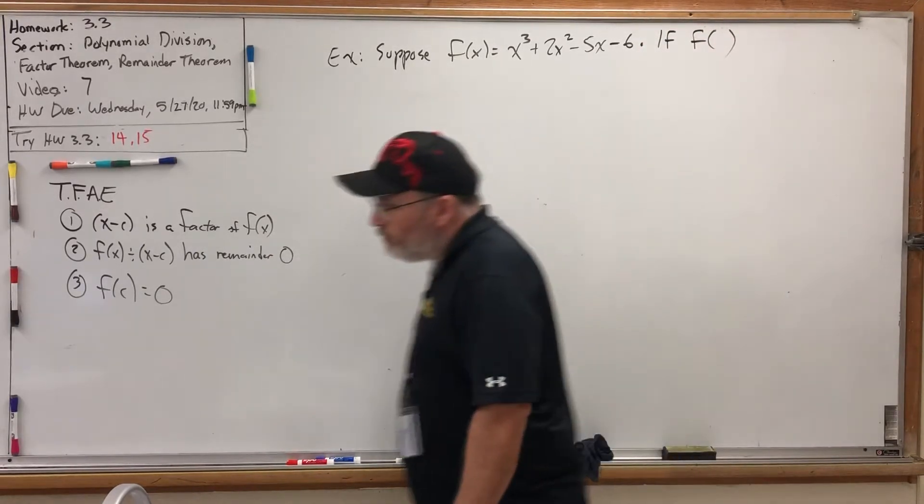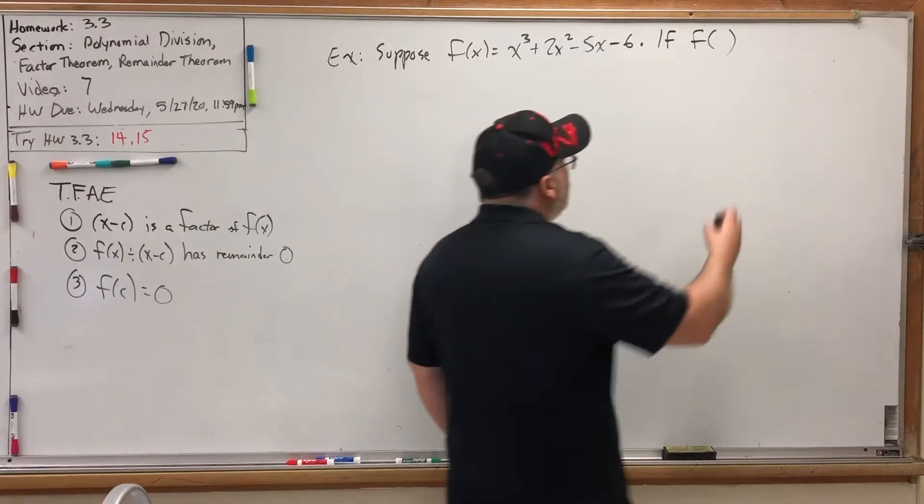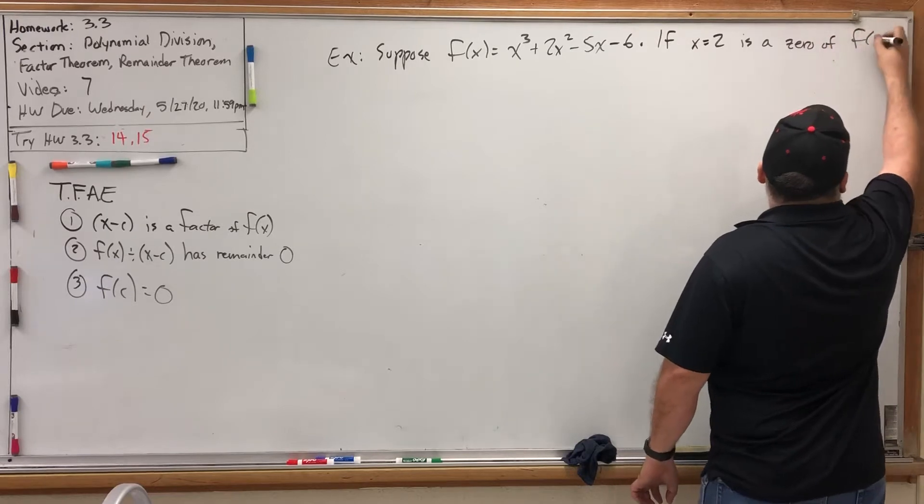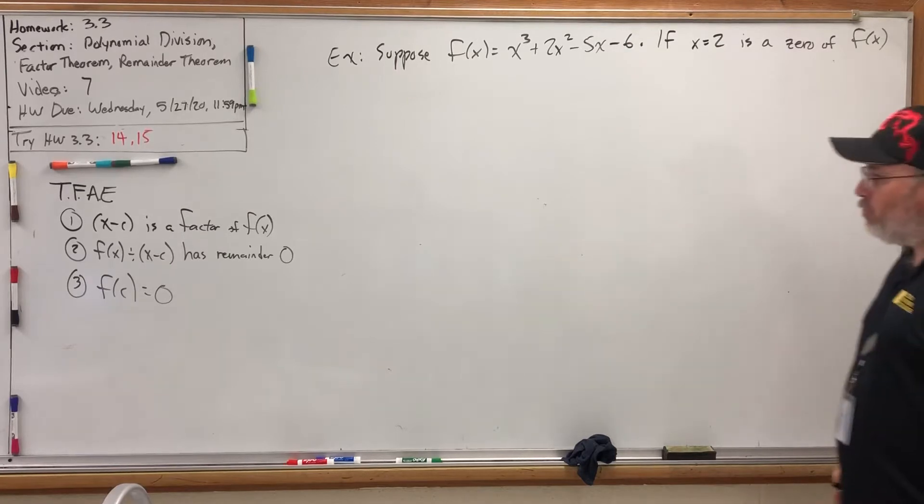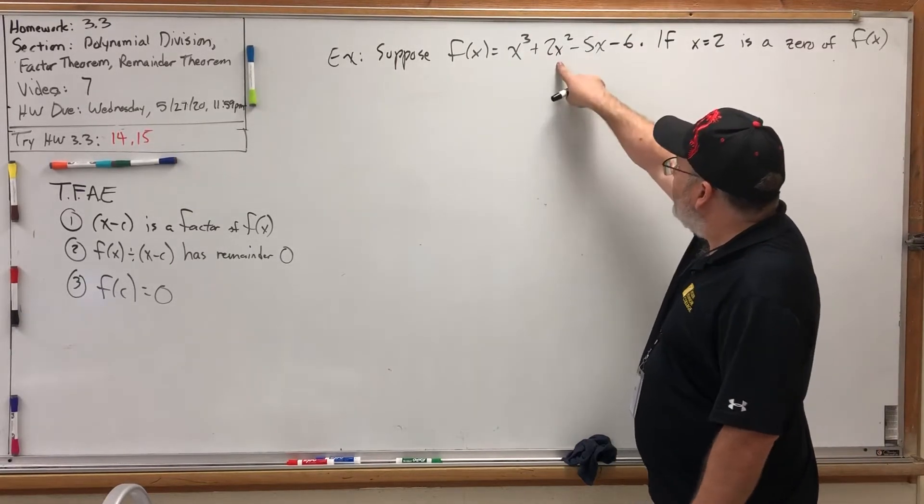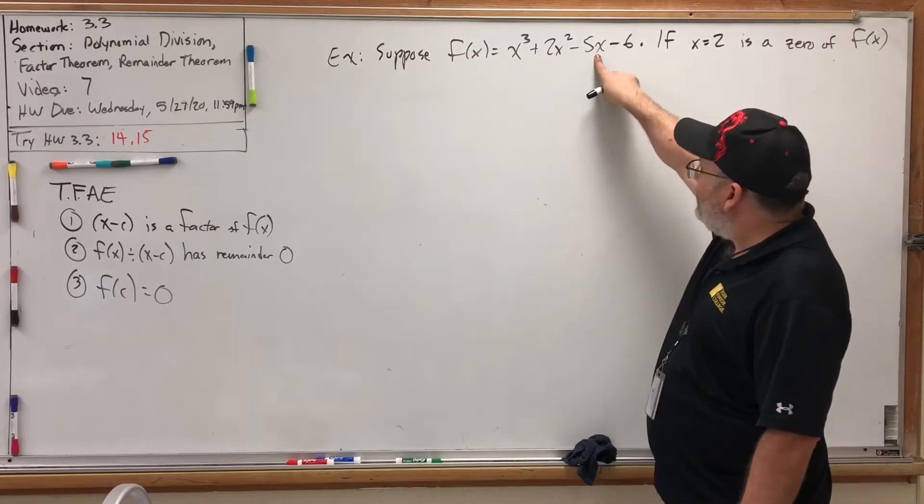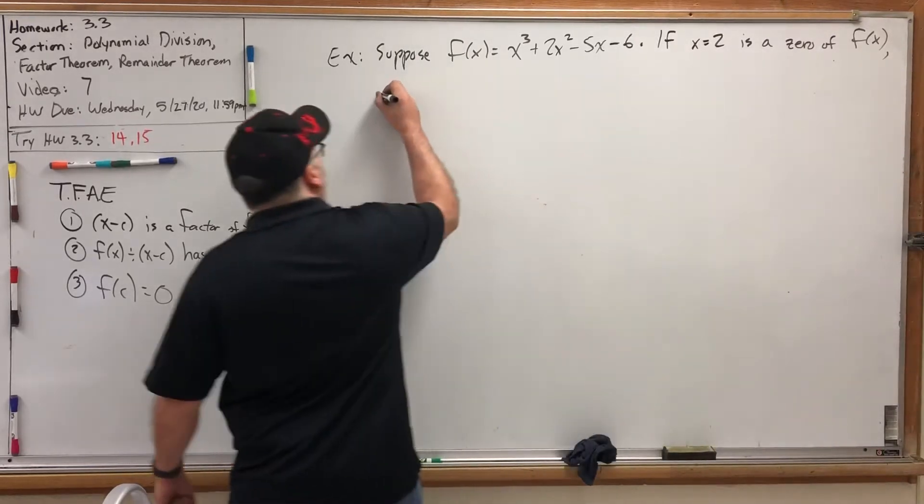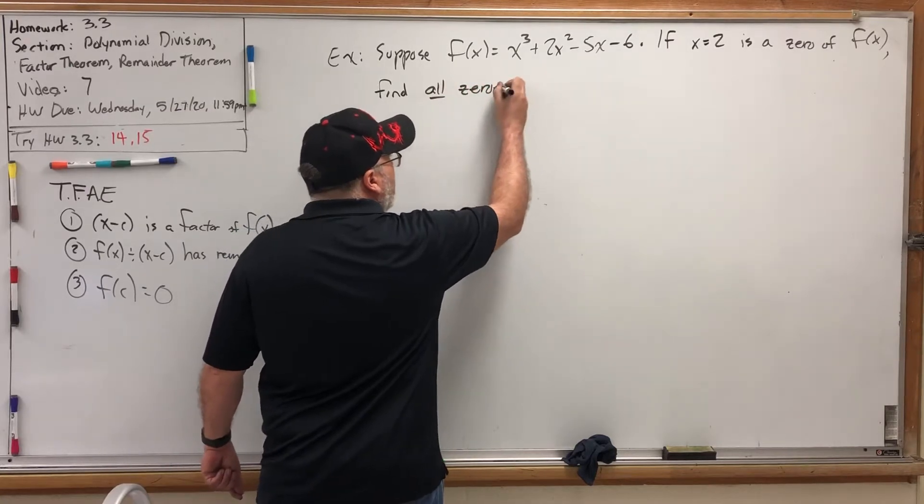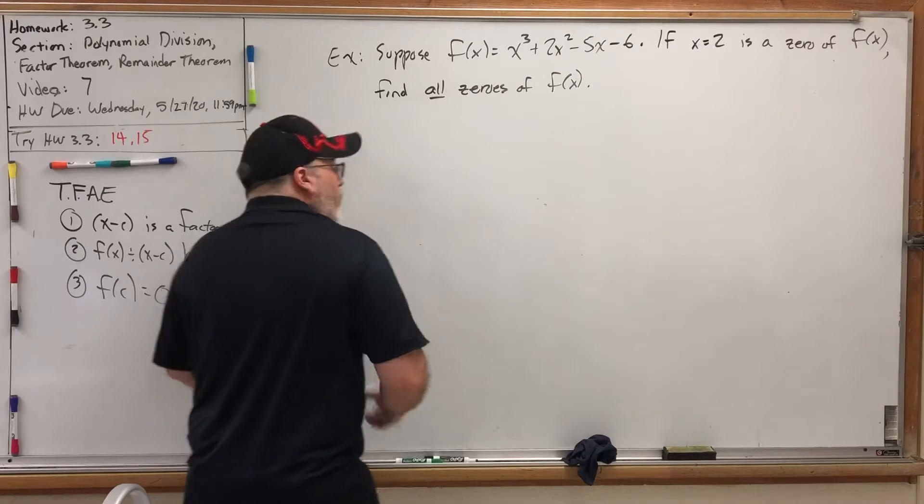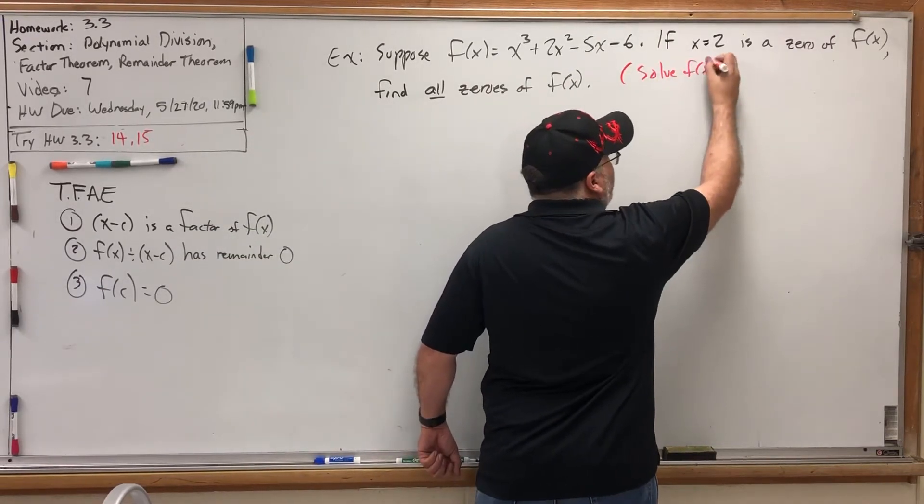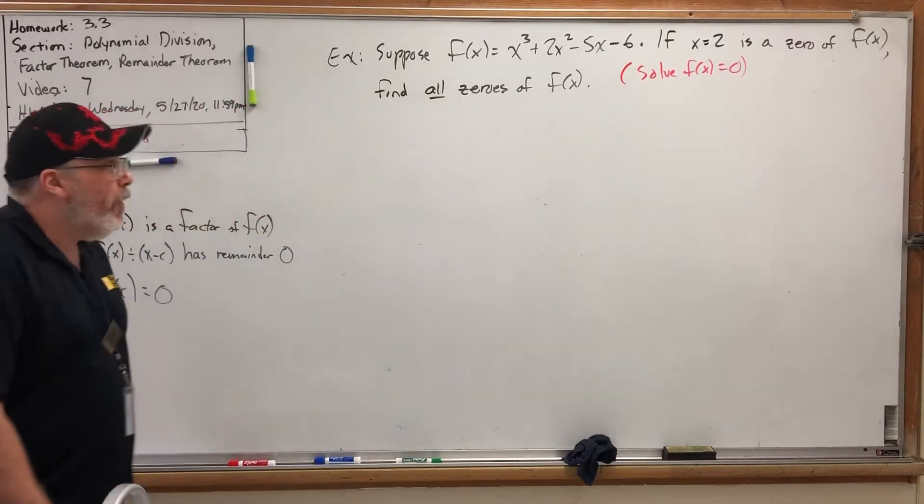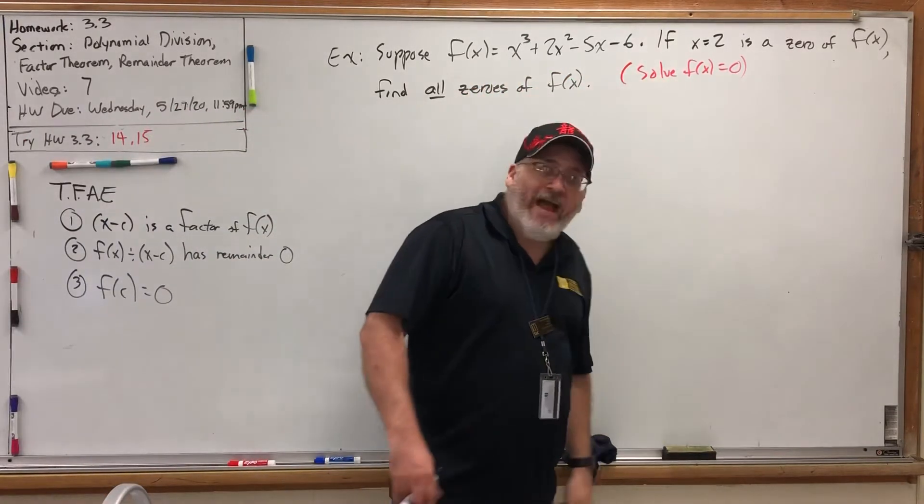If x equals two is a zero of F(x), which means if we put in two, it will come out zero. We can check that real quick, but I'm telling you it does. Two here gives eight, two here gives eight, eight and eight is sixteen. Two here gives negative ten, sixteen minus ten is six, minus six is zero. If x equals two is a zero of F(x), find all zeros of F(x). In other words, what we're being asked to do is to solve F(x) is equal to zero, because that's how you find x intercepts. But how can this hint about x equal to being a zero help us?